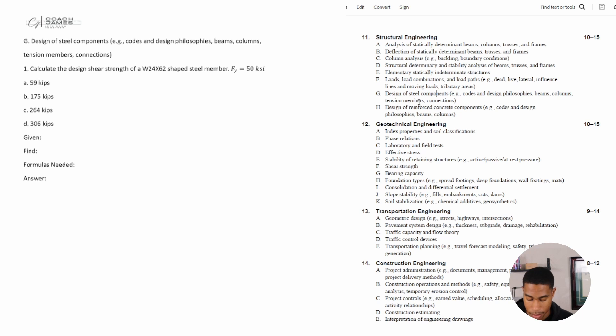Number one says calculate the design shear strength of a W24 by 62 shaped steel member where fy is equal to 50 ksi. We're given that fy equals 50 ksi and that it is a W24 by 62. We're trying to find the design shear strength.